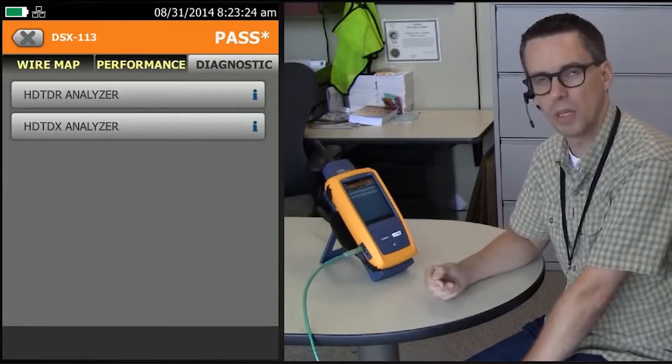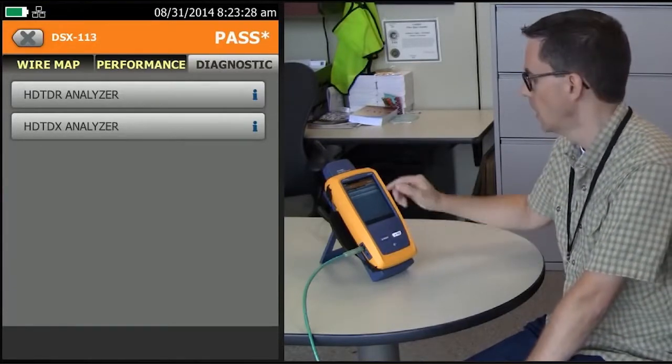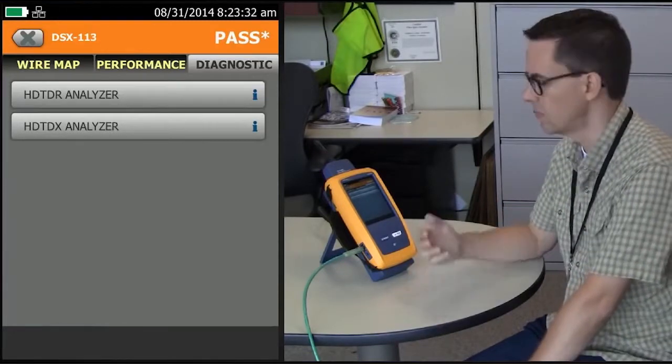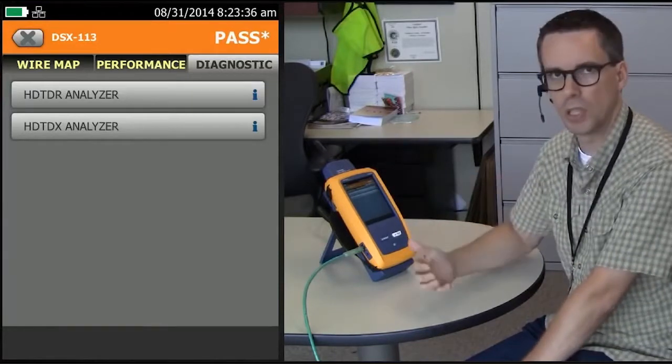I've got two time-domain diagnostic options. That's the ability to look down the cable. The first one is my high-definition time-domain reflectometer, or, I like to say, return loss. It's a good way of remembering that that's for return loss.